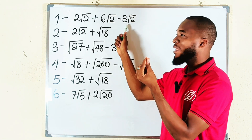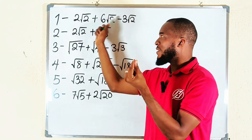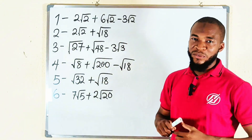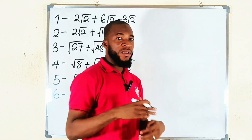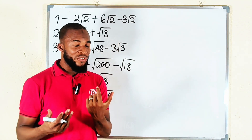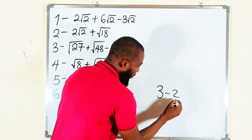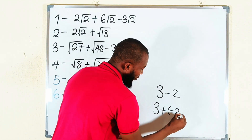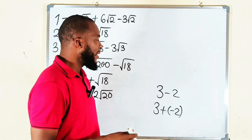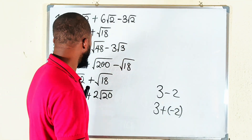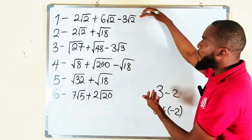For example, number one — you can see we have square root of two, square root of two, square root of two. We say that these are similar surds. I mention addition because three minus two is the same thing as three plus negative two, so we always have a plus in between terms, so we are literally adding.